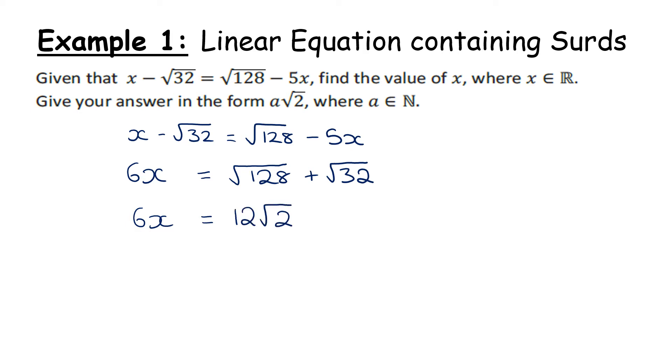Just as normal, if I want to get x, I divide both sides by the coefficient, so I'm dividing both sides by 6. When I divide both sides by 6, I end up with 12 divided by 6, which is 2√2.